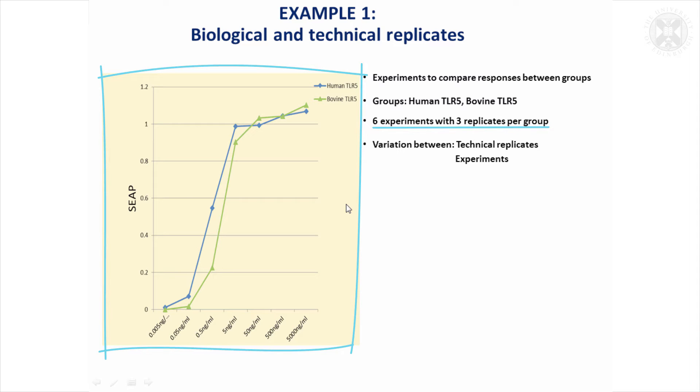So there were six experiments with three technical replicates per group in the experiment. The scientific details involve increasing concentrations of bacteria applied to samples, human and bovine samples, to see what the levels of this SIAP are. These are the means—per group there's the six experiments and the three replicates. We've got 18 observations included in these means, but of course there's variation between the experiments and the replicates that we want to bear in mind.